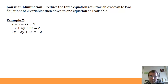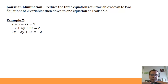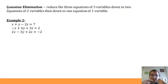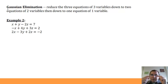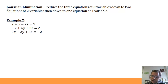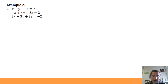Gaussian elimination, named for mathematician Carl Friedrich Gauss who lived in the 1700s to 1800s, takes three equations of three variables and reduces them to two equations with two variables. We solve for one variable, plug it back in to find a second, then use both to find the third. We'll walk through this step by step in example two.